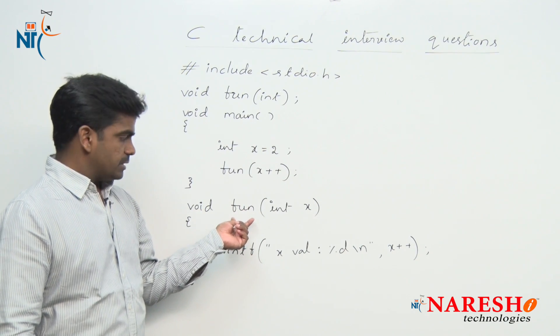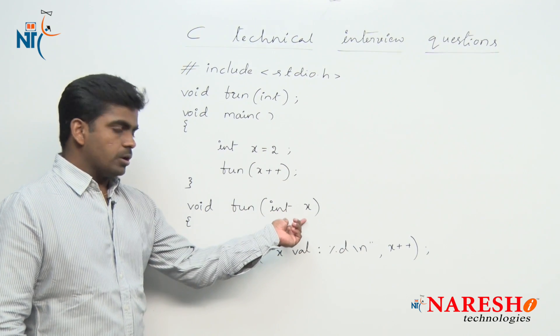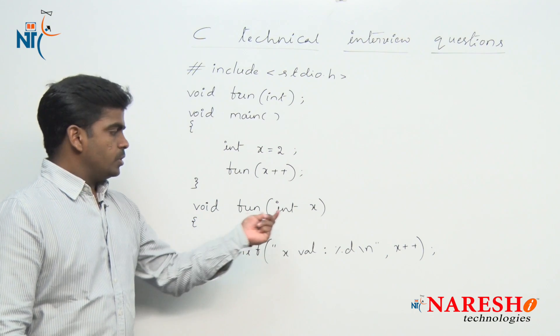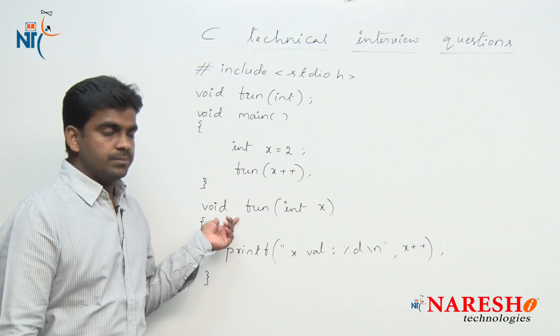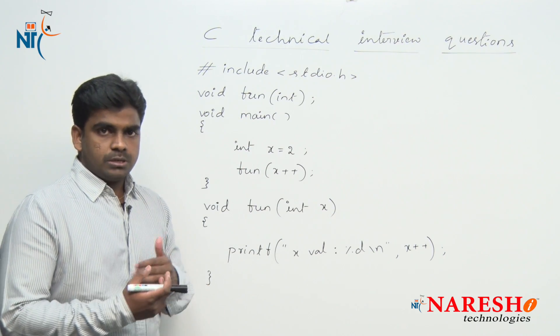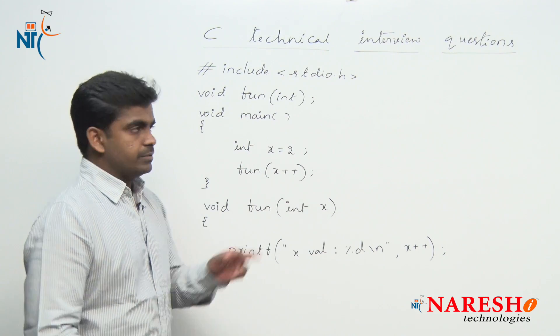The classification is the function is taking argument and it is not returning anything. It is with arguments and no return values classification. Main function is there, and of course program execution starts from the main function.